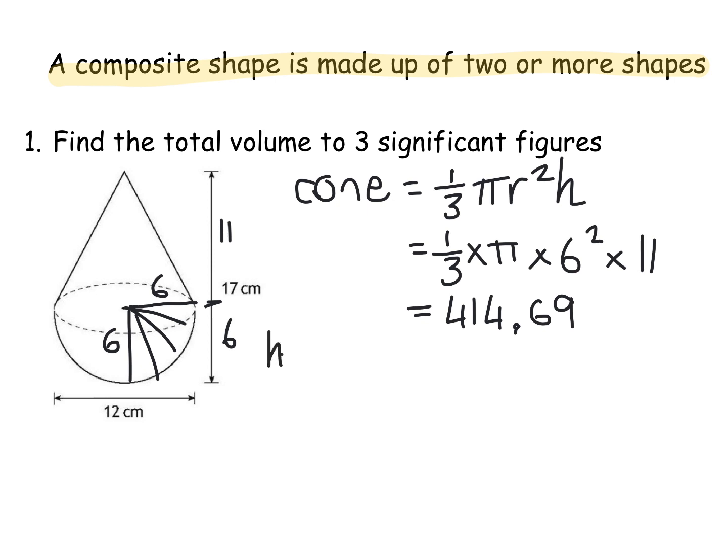Next, I'm going to do the hemisphere. Now a hemisphere is just half of a sphere. So a sphere is 4 thirds pi r cubed, but it's half of that. So I'll stick a divide by 2 on there. Now we've already discussed that the radius of this was 6. So we're doing 4 divided by 3 times pi times 6 cubed divided by 2. And if you type that in, we get 452.389. So I'm going to say 452.39.